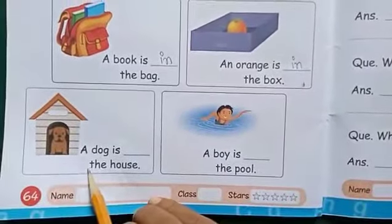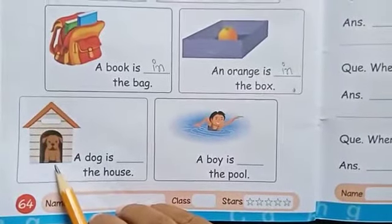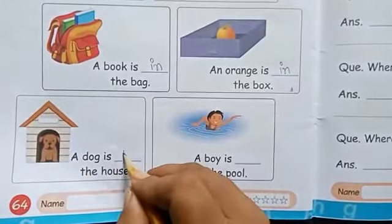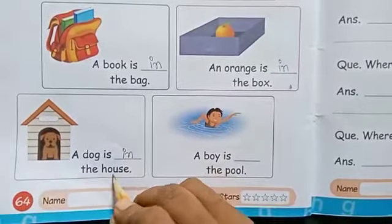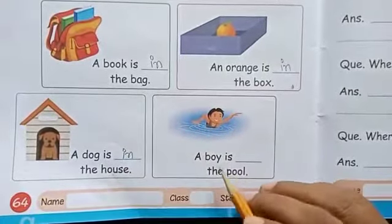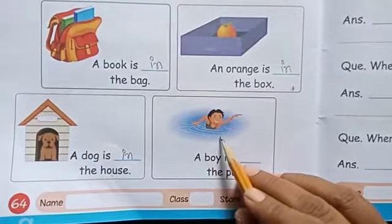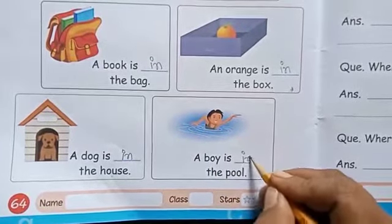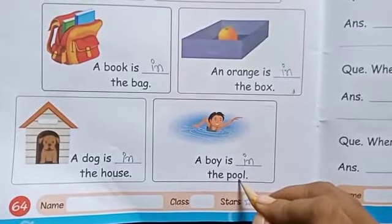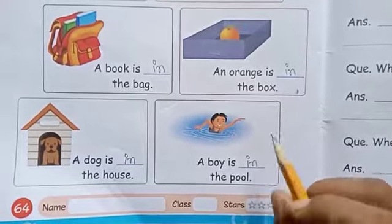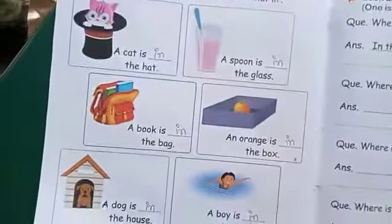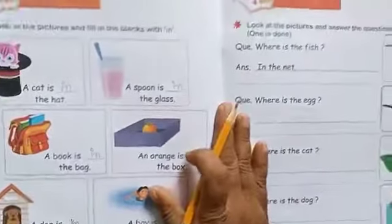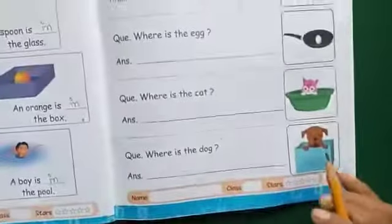Now look at the picture of a dog. Where is the dog? A dog is in the house. Now look here — a boy is in the pool. So students, you have to write 'in' in all these blanks.